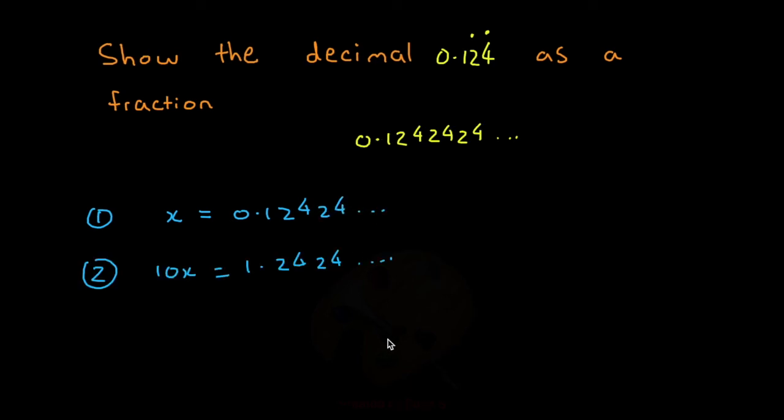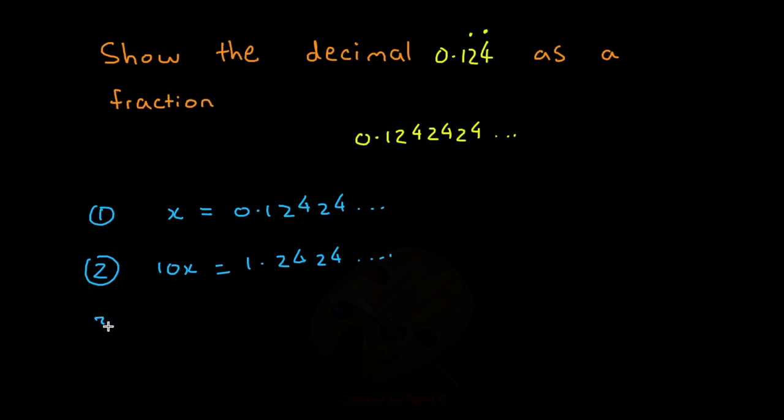The second step is to multiply x by 10. So we get 1.24242424. The third step would be to multiply this by 1000. So we get 1000x is equal to 124.242424, and so on.